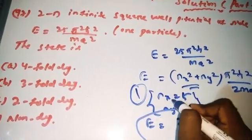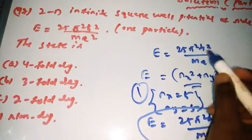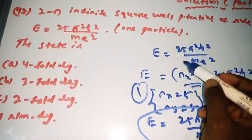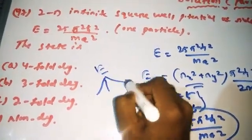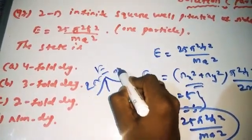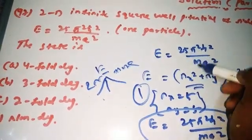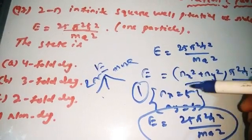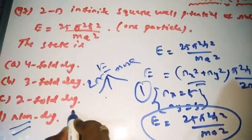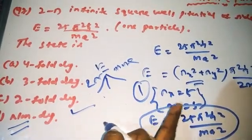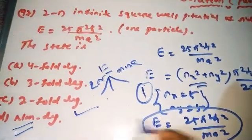One state is ψ(5,5), which means nx = 5 and ny = 5. If you look for the same energy with nx² + ny² = 25, the only combination is nx = 5, ny = 5. There are no other states with the same energy, so this state is non-degenerate. Non-degenerate is the right answer.